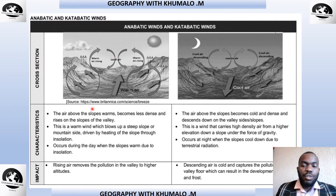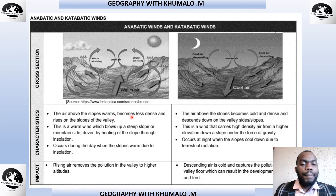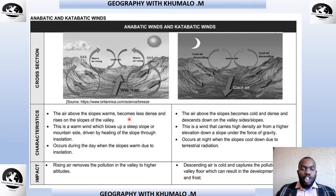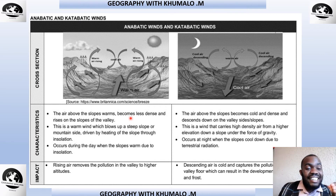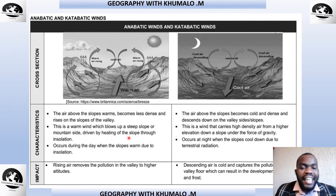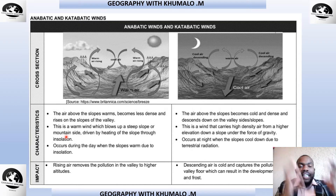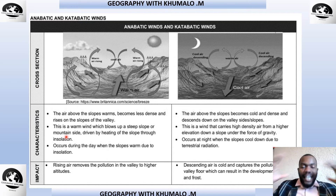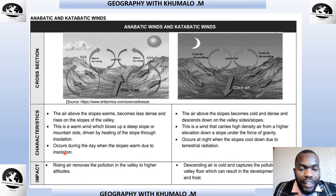For anabatic winds, the air above the slope warms because it becomes less dense and rises up the slope. This is a warm wind which blows up a steep slope or mountainside, driven by heating of the slope through insolation. Our incoming solar radiation heats the slope, the air becomes warm, and it starts rising, forming the anabatic winds. This occurs during the day when the slopes are warm due to insolation.